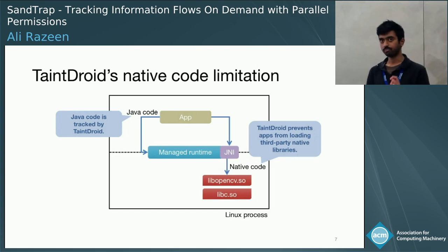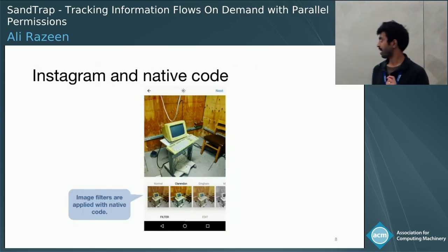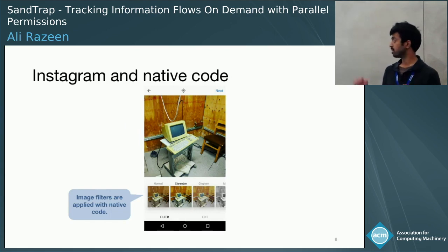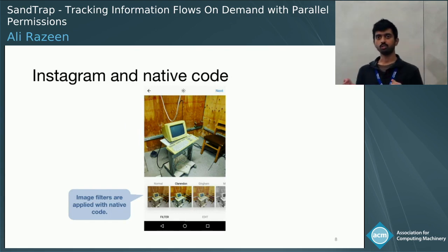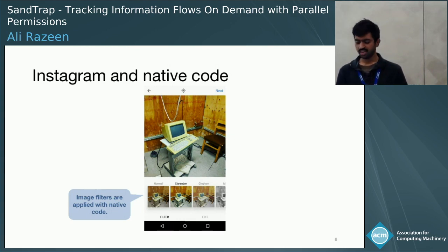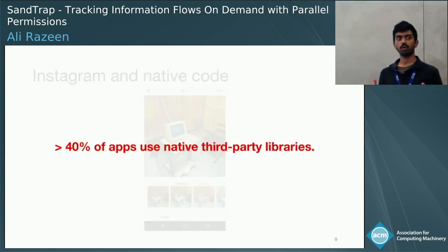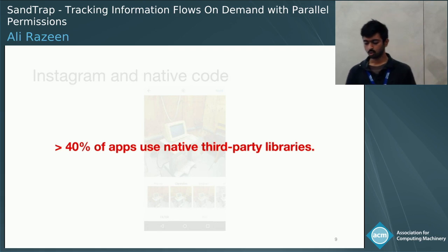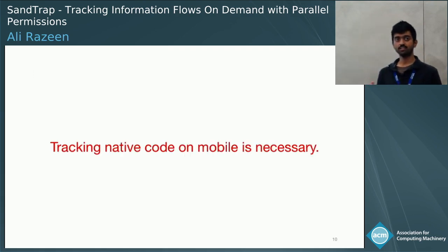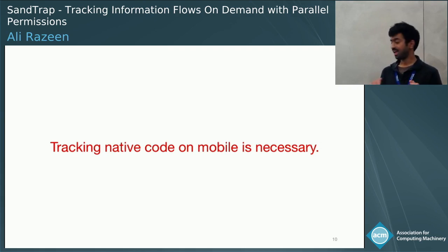A lot of apps do use native code. The Instagram app, for example, uses native code to implement image filters which users can use to alter the appearance of their images. And it's not just Instagram. In an informal study, we downloaded about 80,000 apps from the Google Play Store and found that about 40% of them use some native code. So if you want to continue using taint tracking with these modern apps, we need to seriously start thinking about tracking native code.